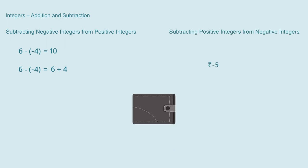Now we will see what happens when a positive integer is subtracted from a negative integer. If I have minus 5 rupees and I am going to give 7 rupees to my friend, I have minus 5 rupees meaning I owe 5 rupees, and giving 7 rupees means I now owe 5 as well as 7 rupees, so totally 12 rupees. So I have minus 12 rupees and we write this as minus 5 minus 7 equal to minus 12. The answer is always an integer.